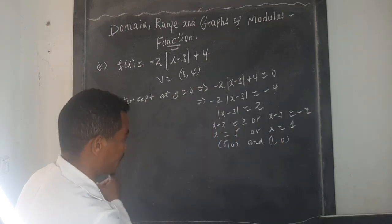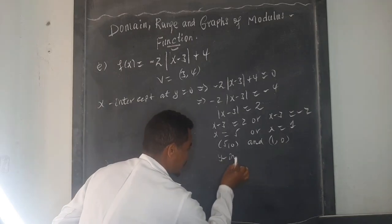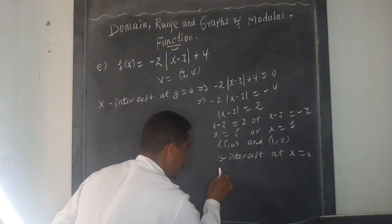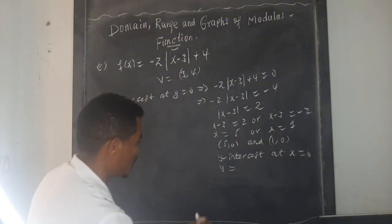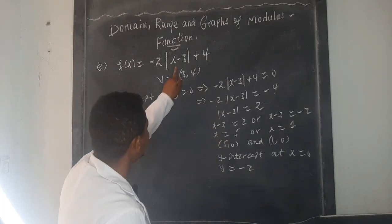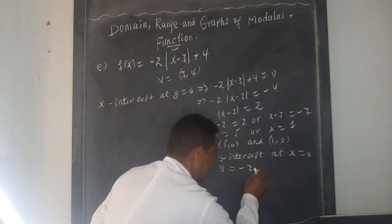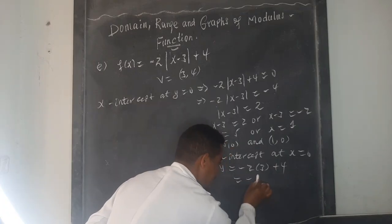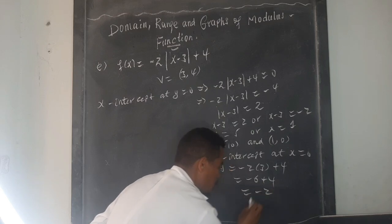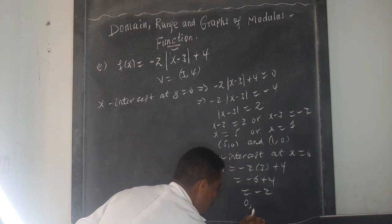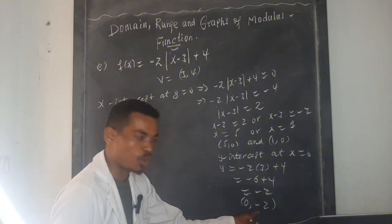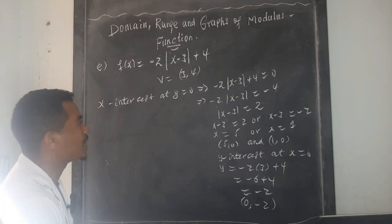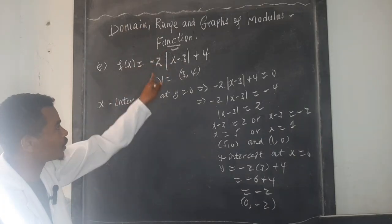For the y-intercept, set x = 0: y = -2|0 - 3| + 4 = -2 × 3 + 4 = -6 + 4 = -2. So the y-intercept is (0, -2). To summarize: vertex at (3, 4), x-intercepts at (5, 0) and (1, 0), y-intercept at (0, -2), and the graph is downward because the coefficient is negative.